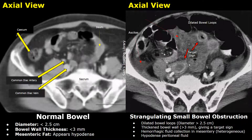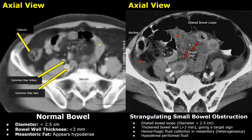A target sign is seen when there is significant bowel wall thickening. In a strangulating obstruction, along with this target sign we can see hemorrhagic fluid collection in the mesentery — the mesentery has a heterogeneous appearance and is filled with areas of increased density. Ascitic fluid is also present — these low-density areas on both sides are ascitic fluid. This increased density in the mesenteric fat strongly indicates ischemia.